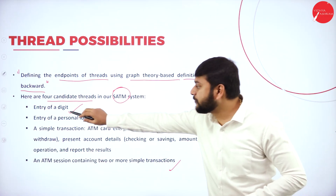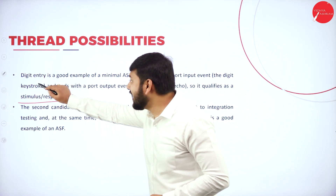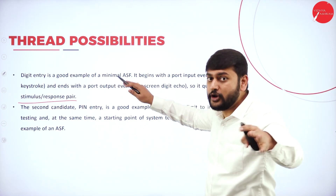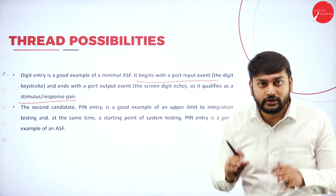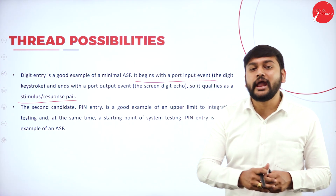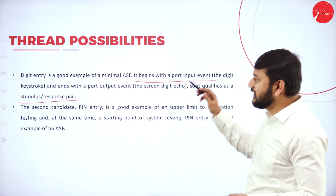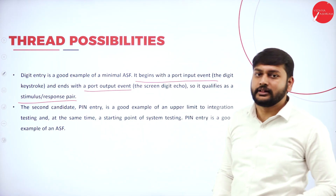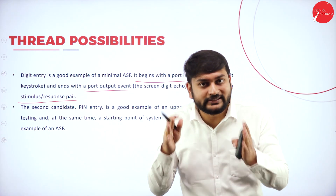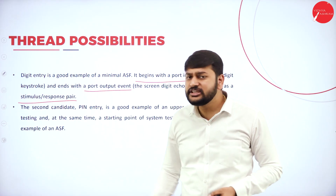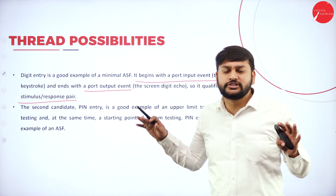Entry of a digit: what happens when I enter a digit? It begins with the port input event, where the user enters numbers, and then the digit keystrokes end with the port output event, which is the display. The input event and output port event both perform the task. We call this a stimulus-response pair. That's what you need to remember about the first candidate.